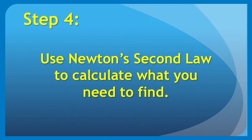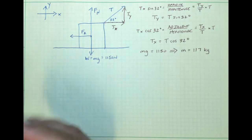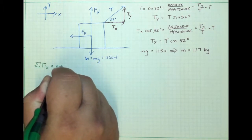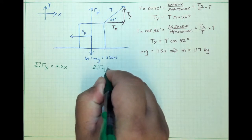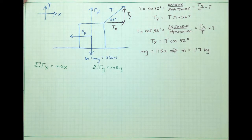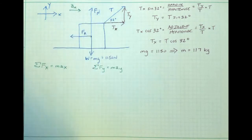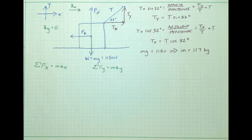Then our fourth step: use Newton's second law to find what we need. We have two formulas for Newton's second law — the sum of the forces in the x direction equals mass times acceleration in the x direction, and the sum of the forces in the y direction equals mass times acceleration in the y direction. We're asked to find the crate's acceleration, meaning the x acceleration. There will be no acceleration in the vertical direction — the crate will not move up or down — so a_y equals zero.